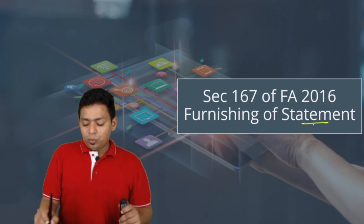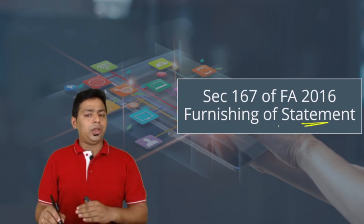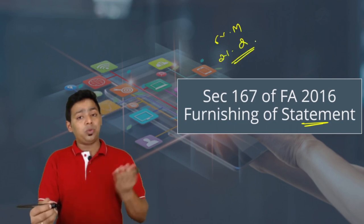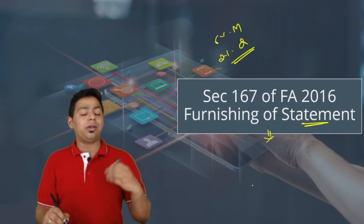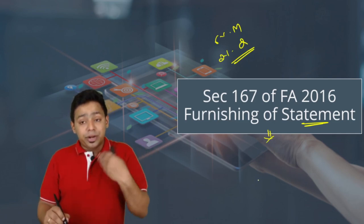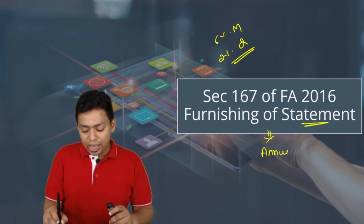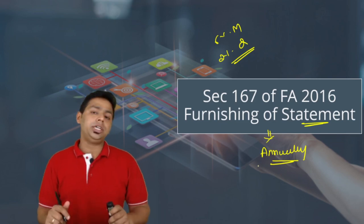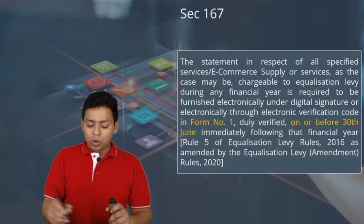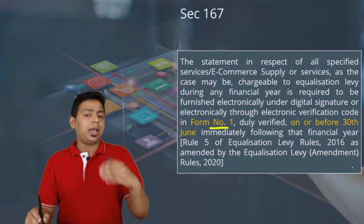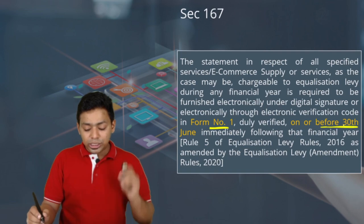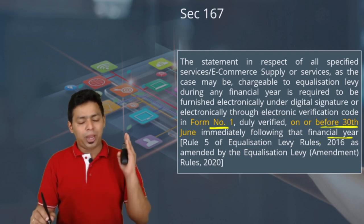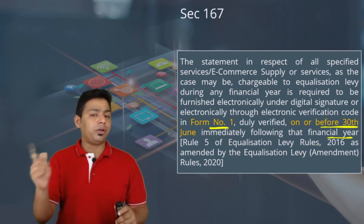Once payment is done — either monthly at 6 percent or quarterly at 2 percent — we also have to file a return, similar to filing income tax returns. Here we furnish the statement annually. This statement will be furnished annually before 30th June. The statement is filed in Form Number 1 — like an ITR form — on or before 30th June immediately following the financial year. All persons responsible to pay or deduct equalization levy must furnish this statement.